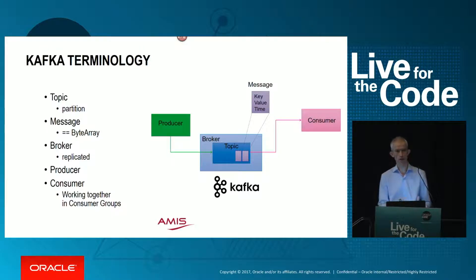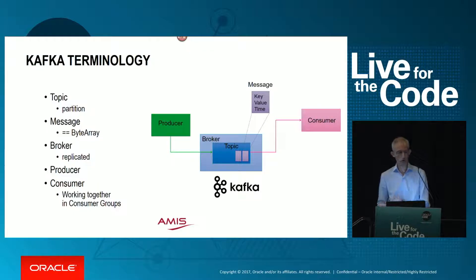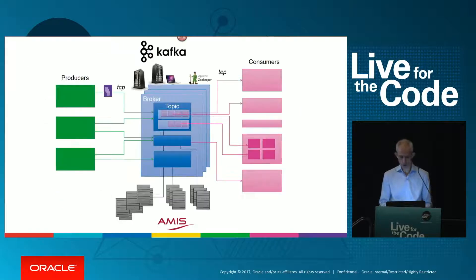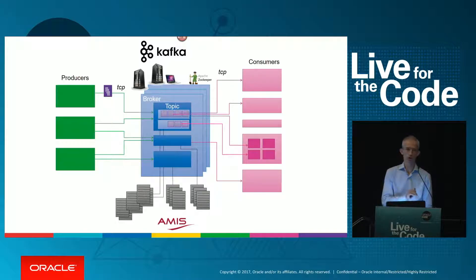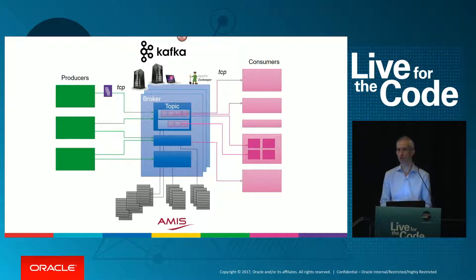The broker is one of potentially many nodes in a cluster — that's where the scalability of Kafka comes from, and it's built into the eventing framework. A message has a key, a value, and a timestamp. We can have multiple brokers with coordination between them; topics can be divided into partitions, which makes it easier to handle them at scale. Consumers can be part of a consumer group where all consumers work together, so each message on the topic is handed to only one consumer in the group — that's where parallel processing comes from, without messages being processed more than once.